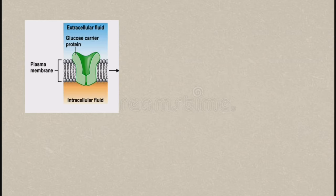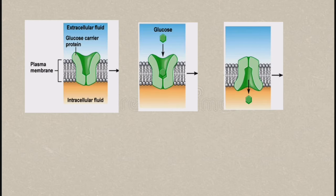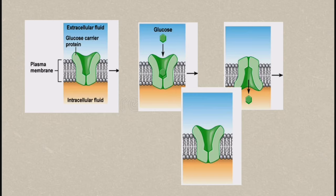When the glucose concentration outside the cell is higher than in the cytoplasm, glucose molecules bind to the specific site of the glucose carrier protein. The carrier protein changes shape to transport the glucose into the cell. After transporting all glucose molecules, it returns to its original shape and is ready to transport other molecules.